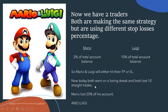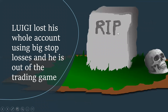My advice: if you ever lose ten straight trades, just step away from the market — refresh your mind. Mario lost ten straight trades but was only using two percent per trade, so he lost twenty percent total. Luigi, on the other hand, was putting ten percent on every trade. R.I.P. Luigi — he lost his whole account using big stop losses and is out of the trading game.